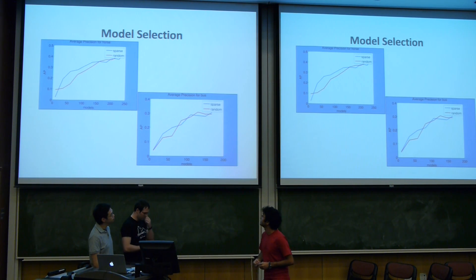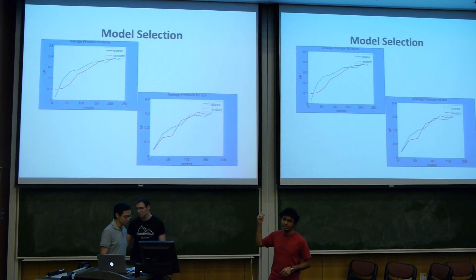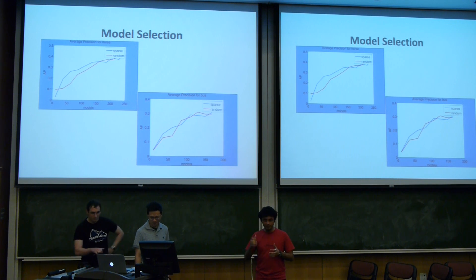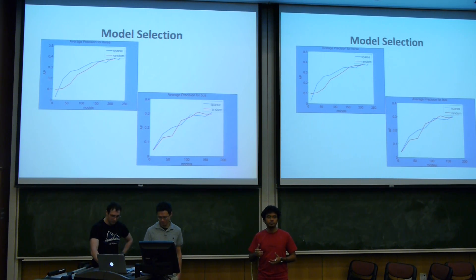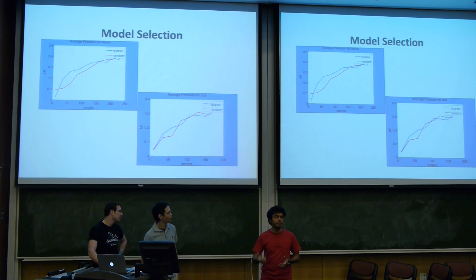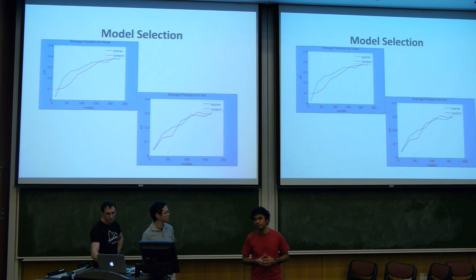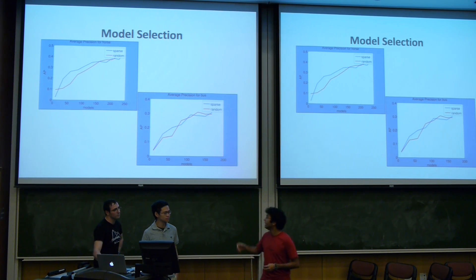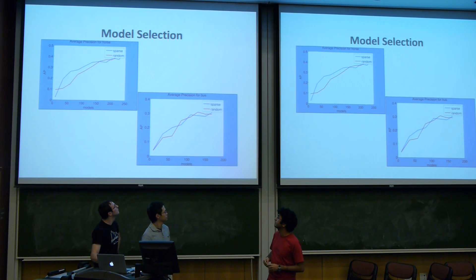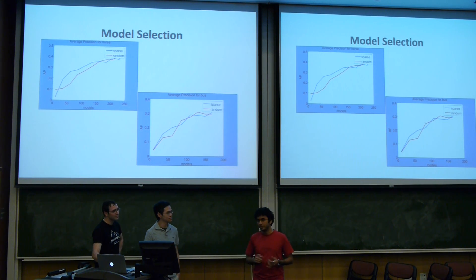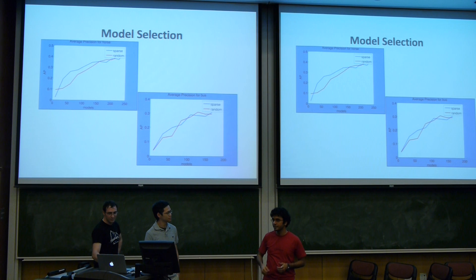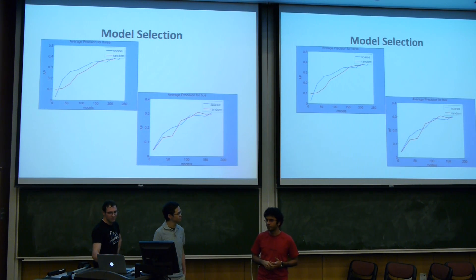In terms of average precision, the baseline is a random baseline where we pick models randomly. We did 50 such trials and picked the best-performing random subset. Sparse modeling does reasonably better than the random baseline, and it is much faster, basically because the convex optimization is very straightforward to solve.